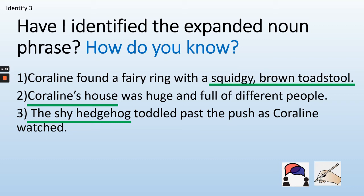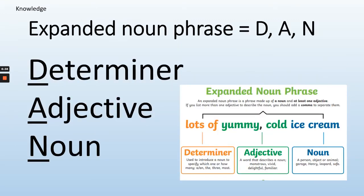Have I identified the expanded noun phrases? Write one, two or three — there might be an expanded noun phrase in the sentence, but if I haven't underlined it in green then I haven't identified it. One: Coraline found a fairy ring with a squidgy brown toadstool. Two: Coraline's house was huge and full of different people. Three: The shy hedgehog toddled past the bush as Coraline watched. Pause the video now and write your answers. The first one — a squidgy brown toadstool — yes, identified. Coraline's house is not an expanded noun phrase. The shy hedgehog is an expanded noun phrase — determiner the, shy is the adjective, noun is hedgehog. Reminder: an expanded noun phrase has a determiner, adjective, noun.